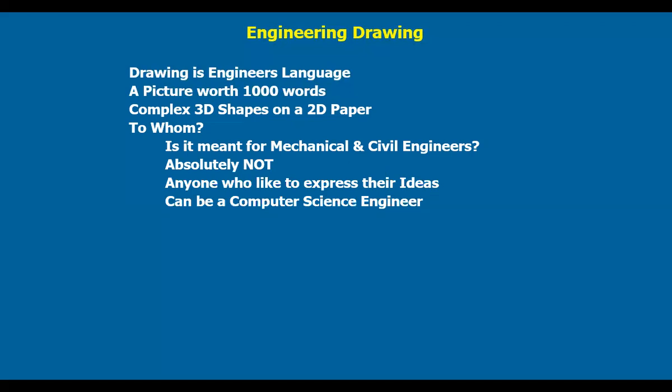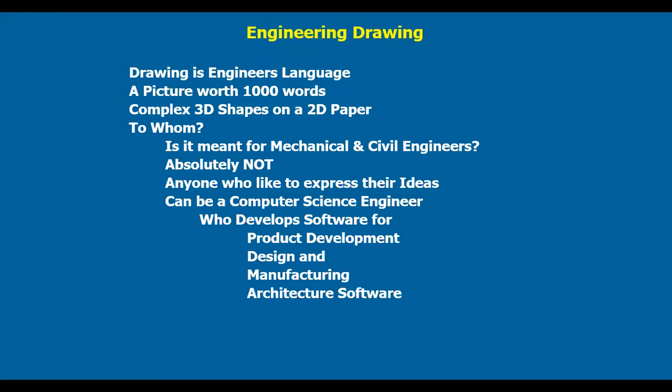A computer science engineer can be one among them because they develop software required for many types of people. It may be for product development or design or manufacturing, or even architectural software. When they have a clear picture about all these objects and drawings, they will be able to develop the required software easily. Even for animations and games, all these require different views. When they have a clear picture about the views and projections and drawings, it will help them develop the required software. So all engineers need it. We can definitely say that everyone needs it who would like to express their ideas.